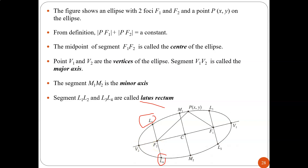The midpoint of segment F1F2 is called the center. That means the distance from the center to F1 and from the center to F2 are equal. Points V1 and V2 are the vertices of the ellipse. In parabola we call it vertex, but since in an ellipse you have two, we call them vertices.